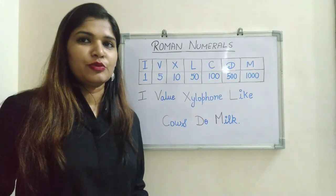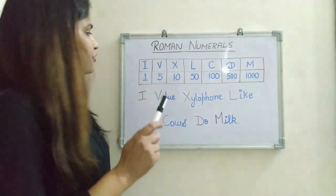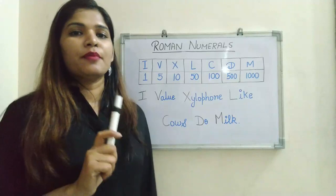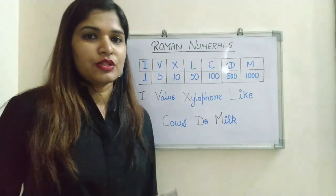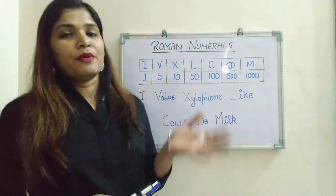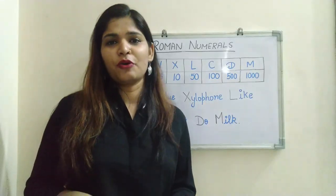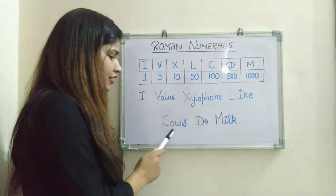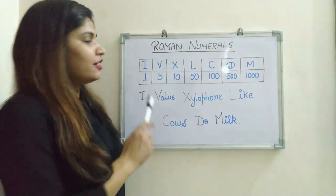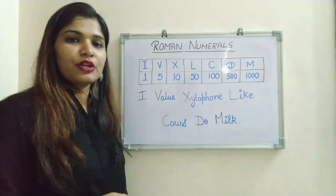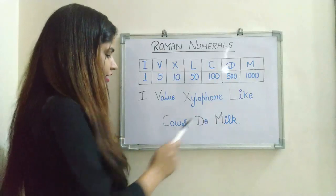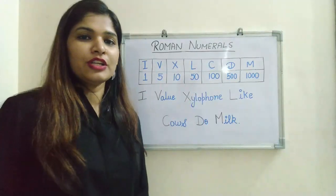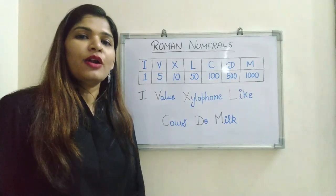As you can see, there is a pattern in these Roman numerals: 1, 5, 10, 50, 100, 500, 1000 — we are only using the numbers 1, 5, and multiples with suffix zeros. To help memorize this sequence, I have a short trick. The sentence is: 'I Tell You Xylophone Like Cows Do Milk.' It includes all the letters used in Roman numerals — I, V, X, L, C, D, M — in the same sequence as the Roman numerals chart.